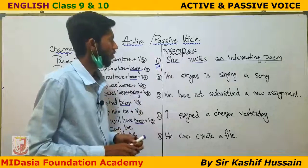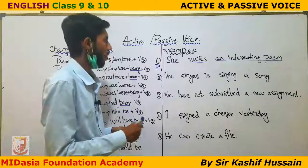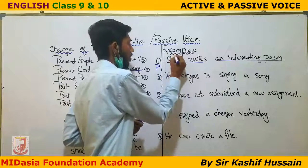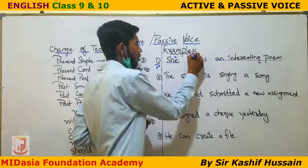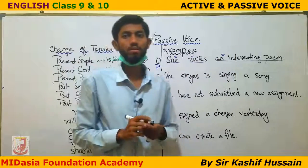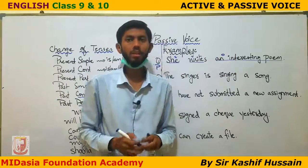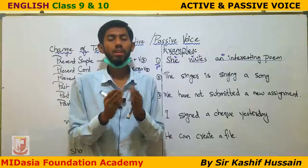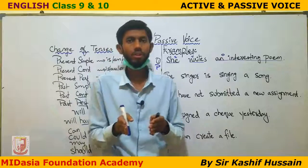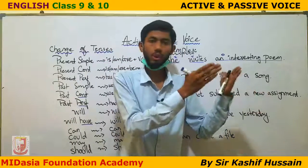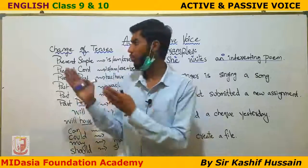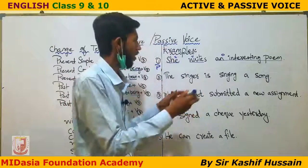In the first sentence: 'She writes an interesting poem.' Let's label it — 'She' is the subject, 'writes' is the verb, and 'an interesting poem' is the object. Remember, at the start of the video I told you that we will always interchange the positions of the subject and object. The subject's position will move to where the object was, and the object's position will move to where the subject was. We will also change the verb according to the rule.